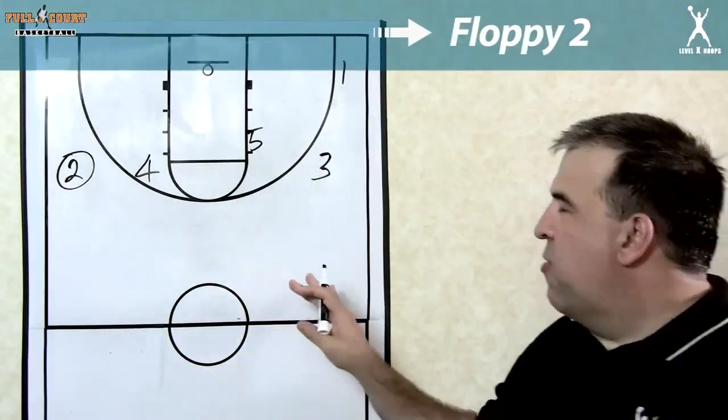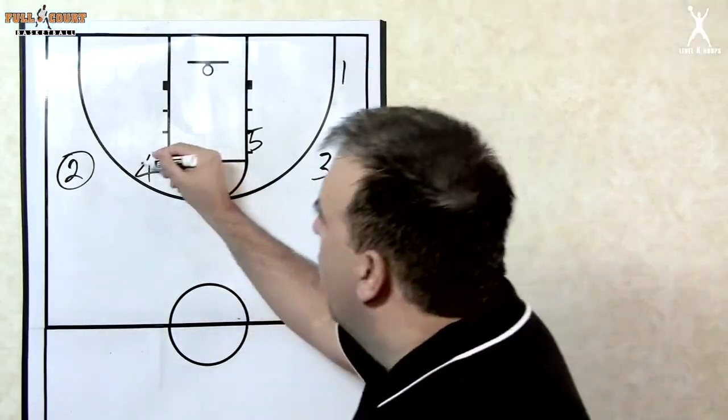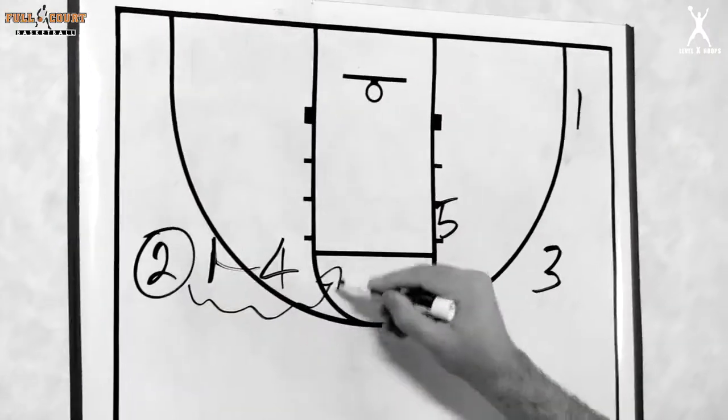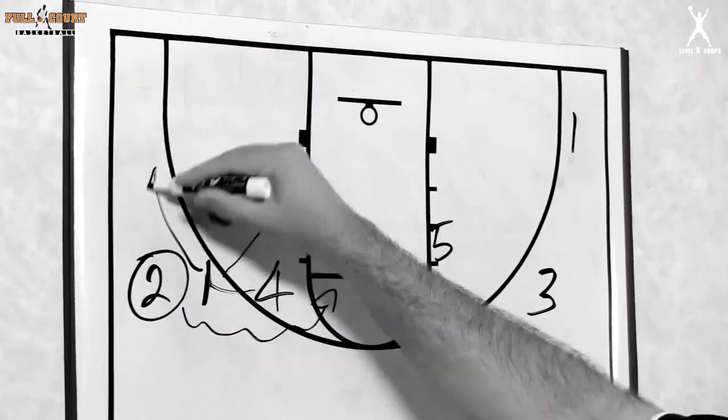We've cleaned up the diagram so we can show you the spacing on the floor. Four sets the ball screen for two. Two comes off the screen. Again, four can roll, four can pop.